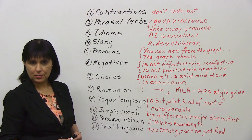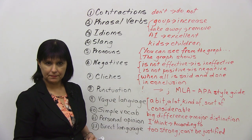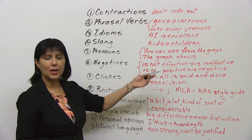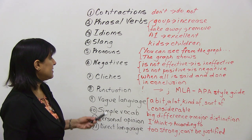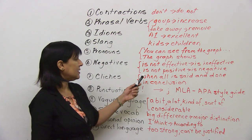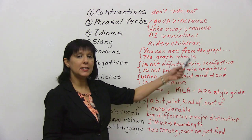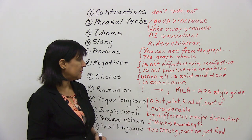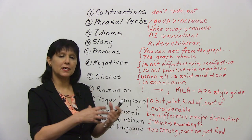Avoid pronouns. For example, instead of saying 'you can see from the graph,' which uses the pronoun 'you,' say 'the graph shows.' Next, avoid negatives. Instead of saying something 'is not effective,' just say it 'is ineffective.' Instead of saying something 'is not positive,' say it's 'negative.' Avoid these kinds of negatives.